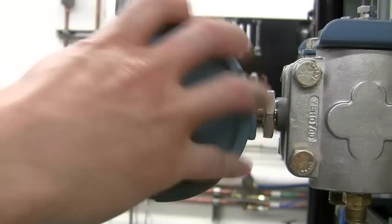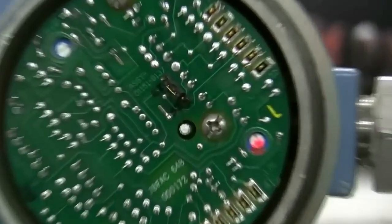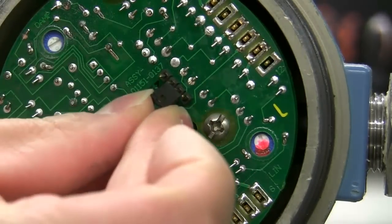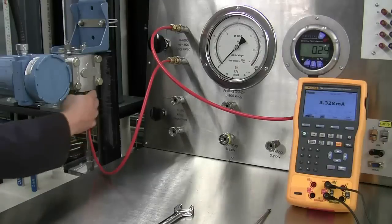The last step before calibration is to confirm that the range jumper is in the proper location. The range jumper should be in the middle for the range that we're calibrating the transmitter. We are now ready to calibrate the transmitter.